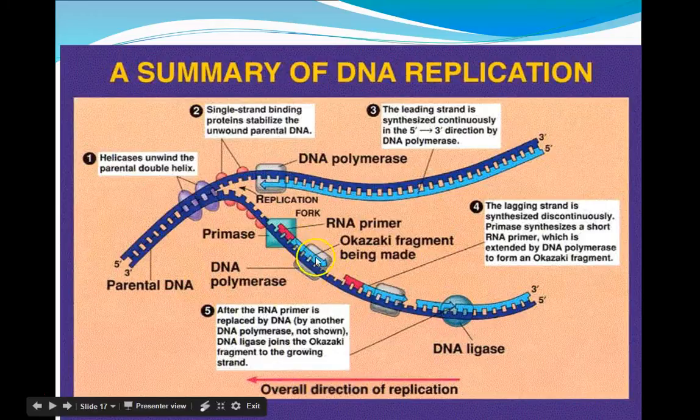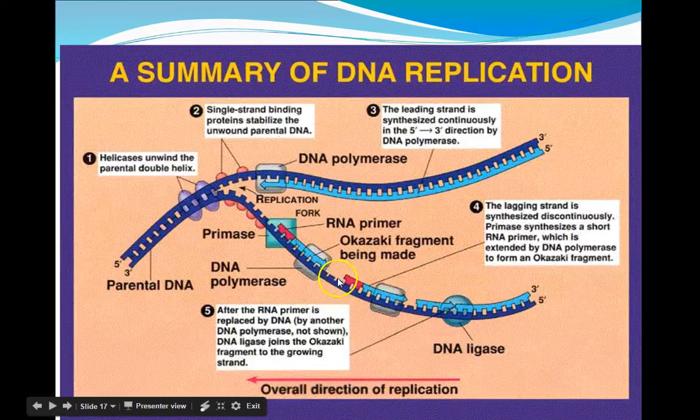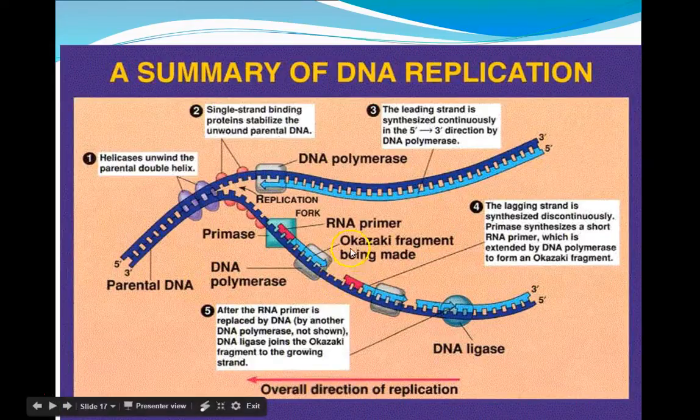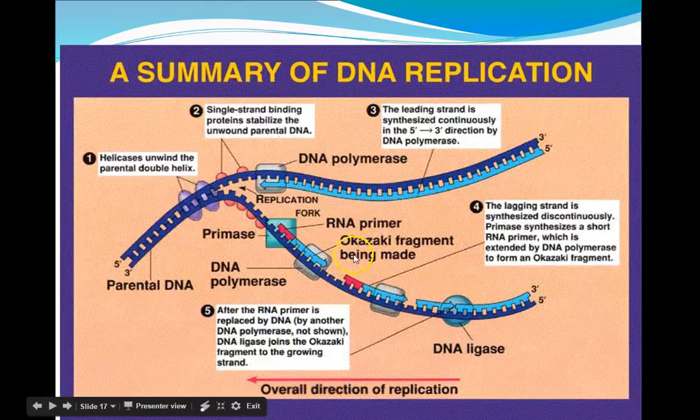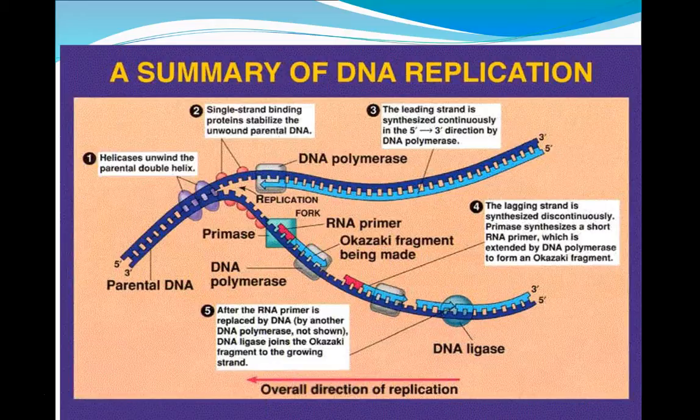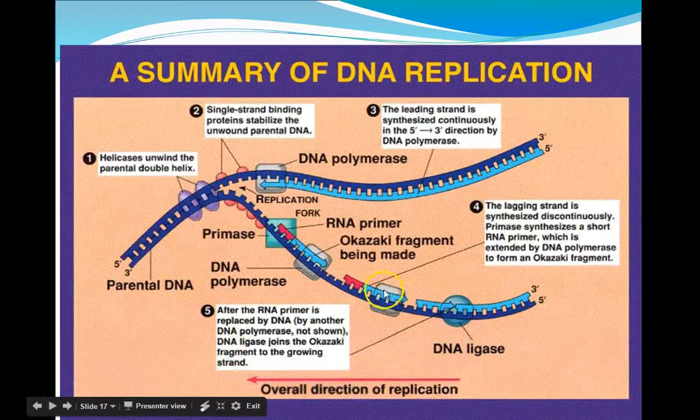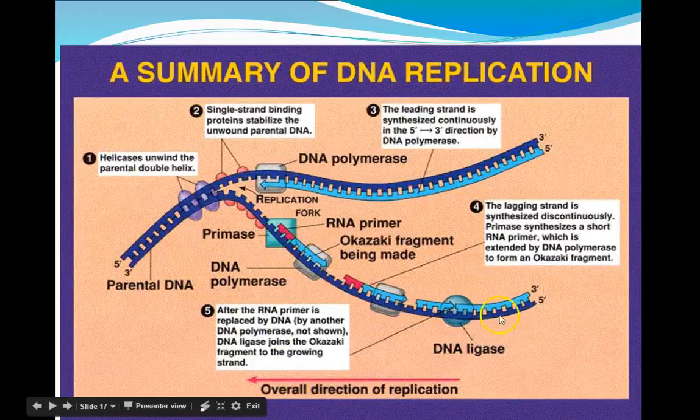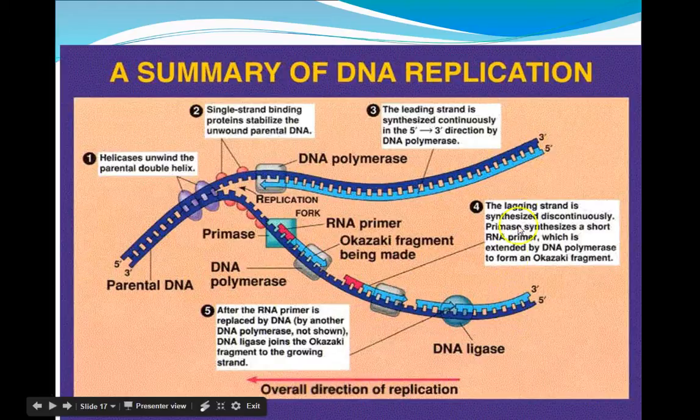So as it does this, it builds these individual fragments of DNA, which are named after the scientists that discovered it. His last name is Okazaki. So we call these Okazaki fragments. These Okazaki fragments must be spliced together by another enzyme. And the enzymes that will join these Okazaki fragments together are called DNA ligase. So they will connect or splice these fragments together to create a replicated strand of the lagging side. So when it's all said and done, you will have a complete copy of the DNA.